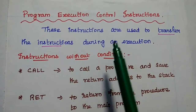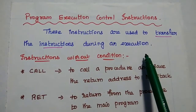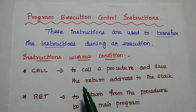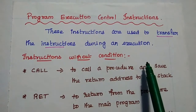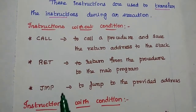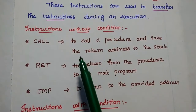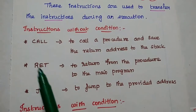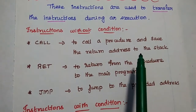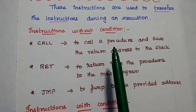Next are Program Execution Control Instructions. These instructions are used to transfer control during execution of the processor. If the processor is executing its main program and you want to execute a procedure in between, we stop the main program and call that new program using this instruction. There are two types: instructions without condition and instructions with condition. Without condition includes: CALL instruction — used to call a procedure and save the return address to the stack pointer, stopping main program execution and transferring control to the procedure location.